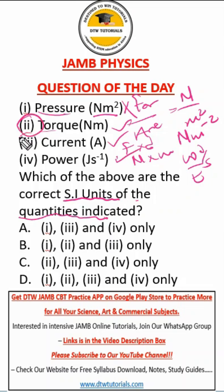So the correct SI units are torque and power (and current). Our right option here is option C.